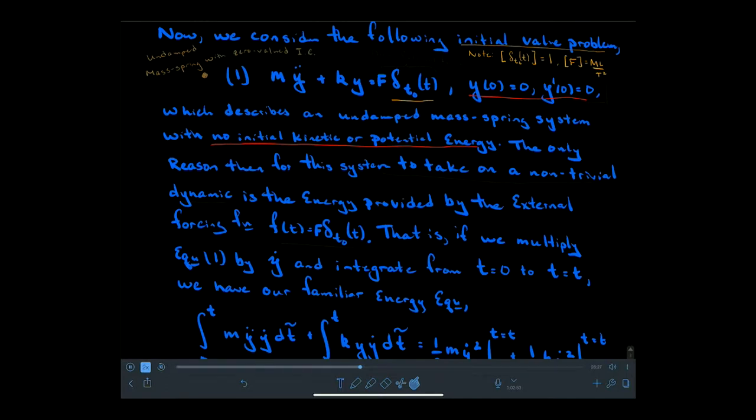If I just had the zero valued initial conditions over here, that would mean this mass spring system would not move. There's no initial displacement, no initial velocity, nothing to get it off the trivial equilibrium solution. So what we introduce here is this Dirac external force. Any dynamics that are going to happen in the system are a result of the impulse that we give it at time t0 through this delta. The only reason for the system to take on non-trivial dynamics is the energy that's being provided by f of t.